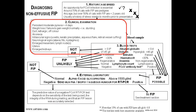As we work through the following steps of the FIP diagnosis algorithm, we should be able to rule FIP in or out for this cat. We now move on to the second part of the FIP diagnostic algorithm: the clinical signs.